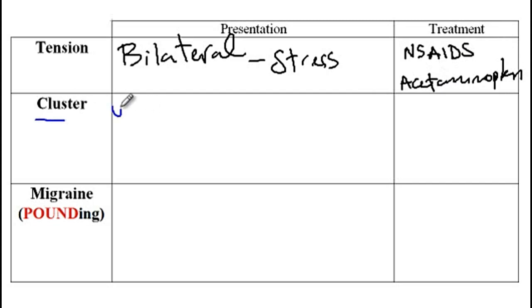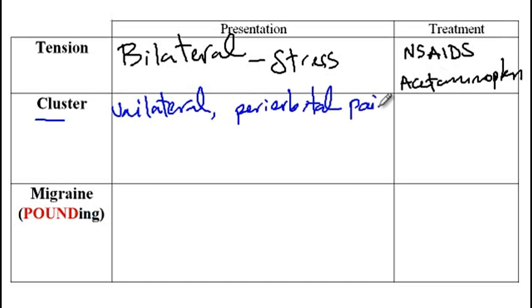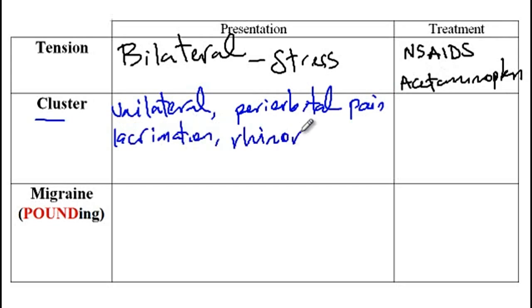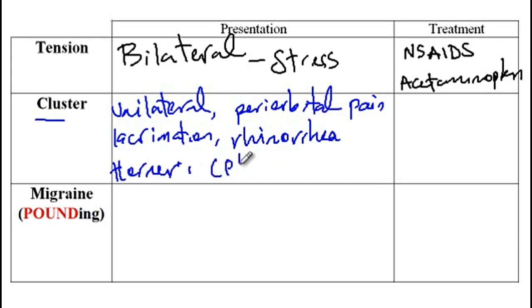Next, we have cluster headaches, which are unilateral and present with periorbital pain, as well as lacrimation and rhinorrhea. These patients also have Horner-like syndromes, such as ptosis as well as miosis.